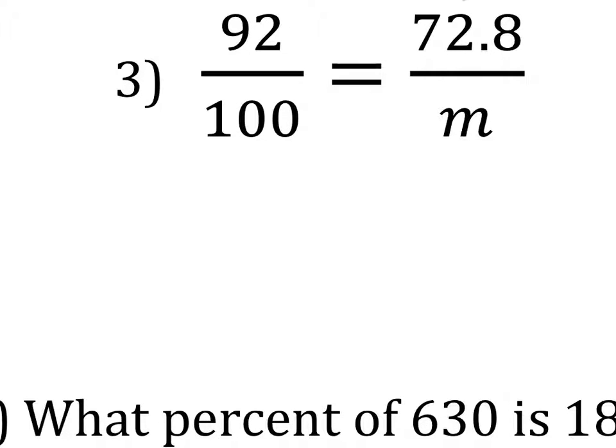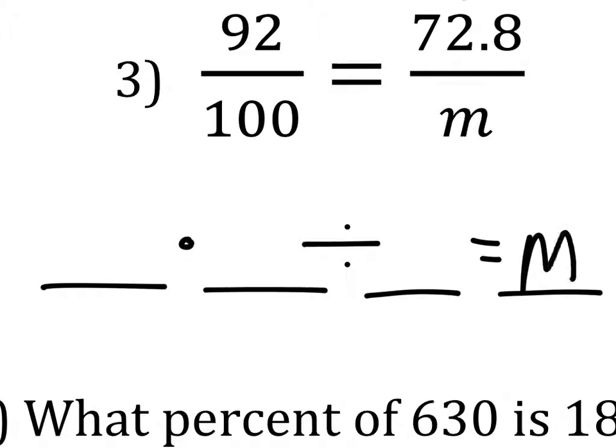All right, number three. You guys wanted the fishy method on this one. So we have these four values. It's multiply, then divide, and we're solving for M in this one.